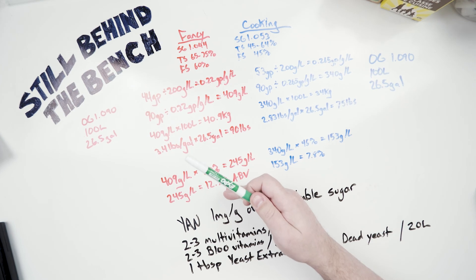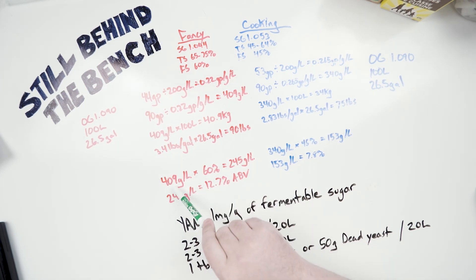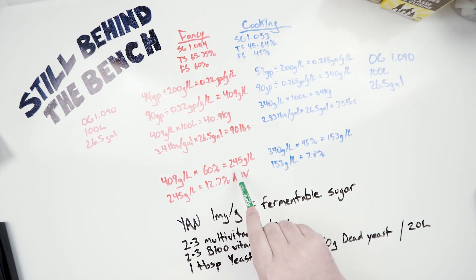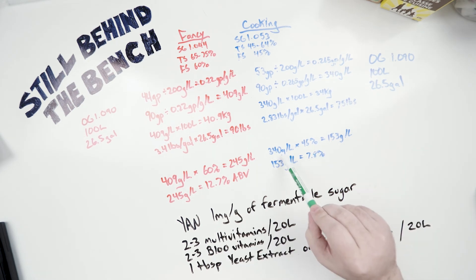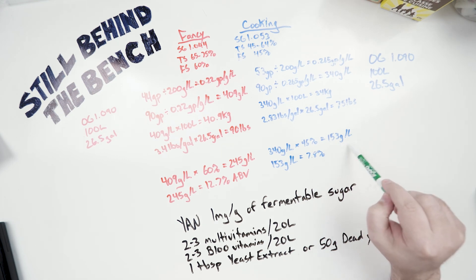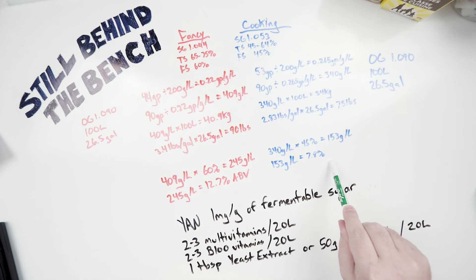So taking that into account, we have our 409 grams per liter. That's how much molasses I need to add. Only 60% of it is fermentable sugars. That means 245 grams per liter of that molasses is fermentable sugar. I plug that into genocalc and I get 12.7% ABV. Doing the same thing for the cooking, 340 grams per liter times 45% gives me 153 grams per liter and 153 grams per liter is roughly 7.8% ABV.